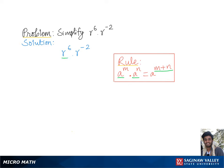In our problem we have two expressions with the common base r multiplied by each other, so we keep the common base r and add the exponents together: six plus negative two, which gives us r to the sixth minus two, giving us the final form r to the fourth.